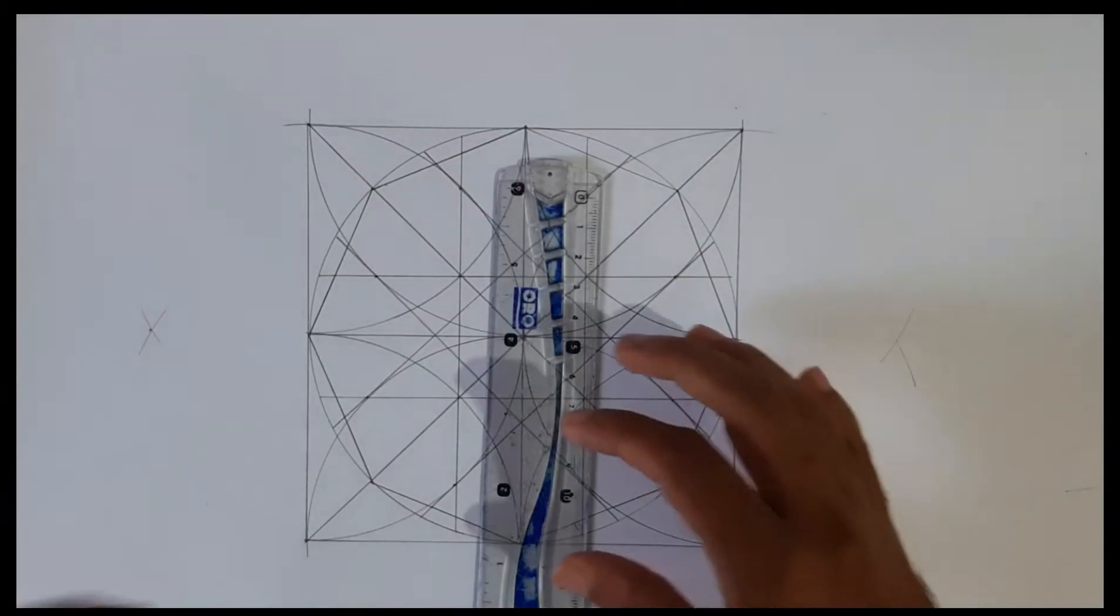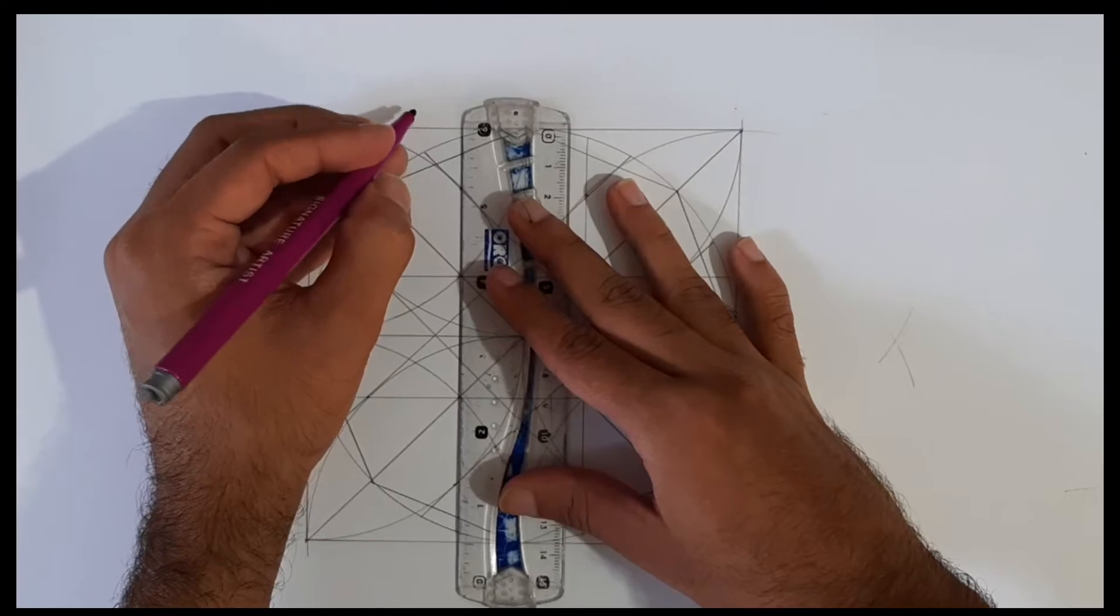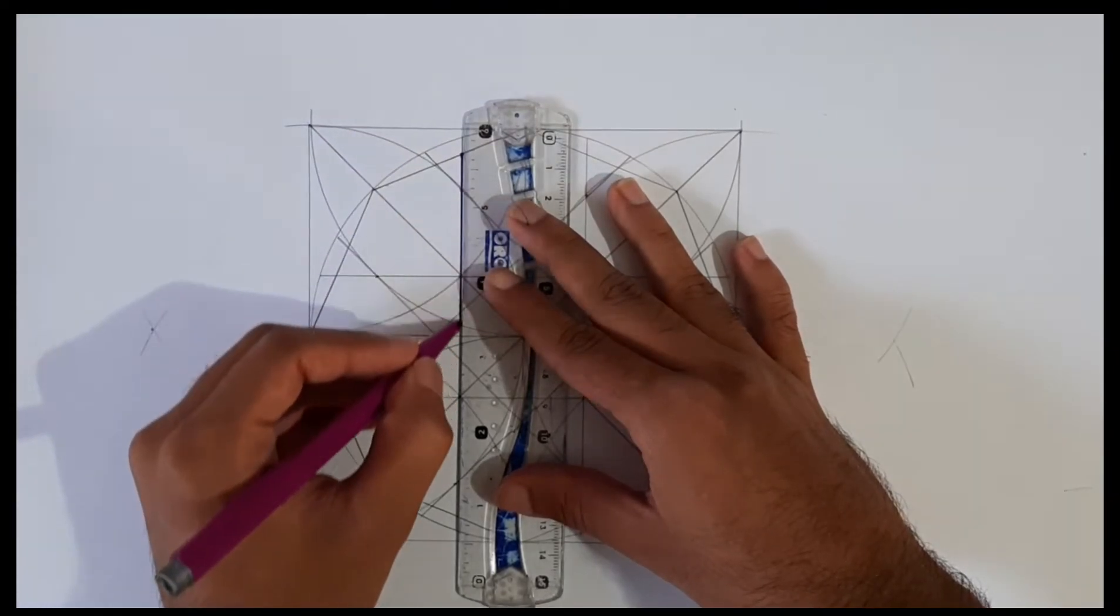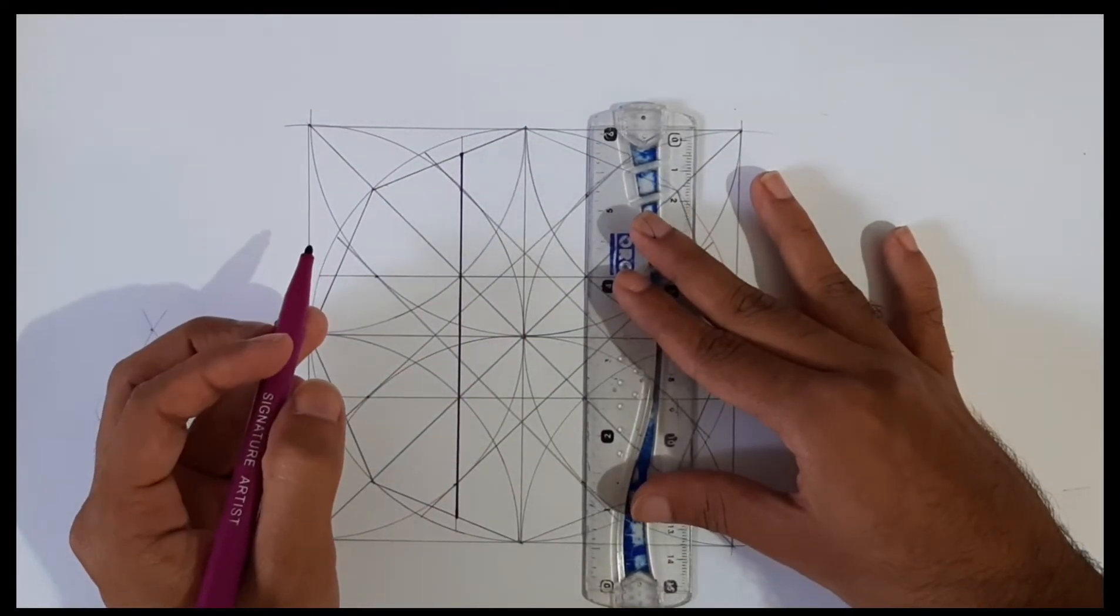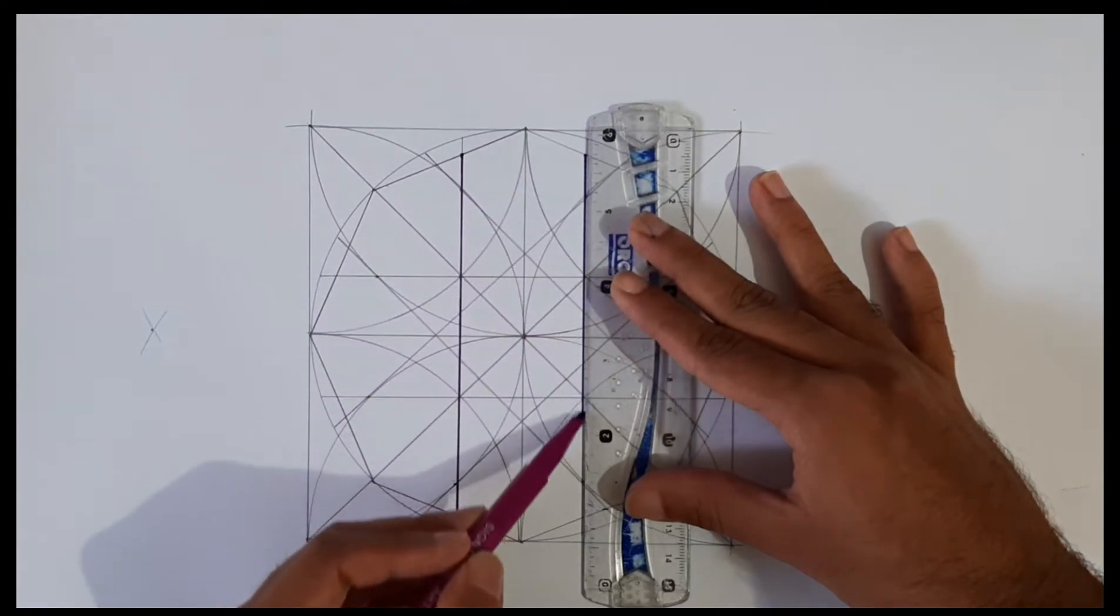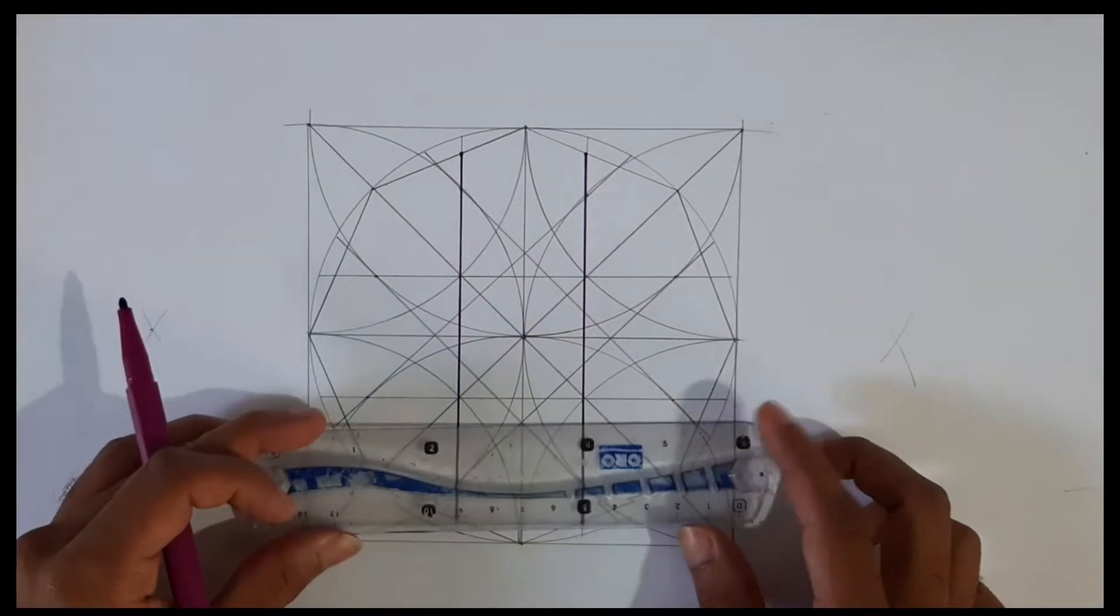Now the construction lines are complete and we have to just pull out the 8-fold rosette pattern. Highlight the desired lines with some darker pencils so that we can keep track and it becomes easy to remove undesired lines.